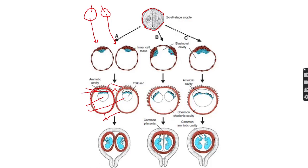In monozygotic twins, if the split occurs at a later stage, the blastocyst has already formed but contains two inner cell masses. These two inner cell masses produce two amniotic cavities but a single chorion and single placenta, because the outer cell mass is single. This type of pregnancy is known as monochorionic diamniotic twin pregnancy.